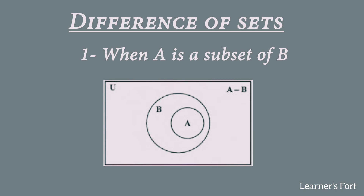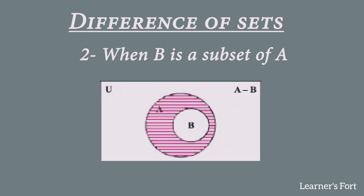The second case is when B is a subset of A and we perform A minus B. A is the bigger set and B is drawn inside it. After subtracting the elements of B from A, some elements still remain in A. So A minus B is not an empty set. We shade the entire set A excluding the portion of B, showing the elements remaining after the subtraction.